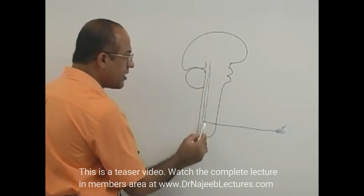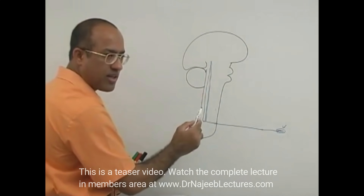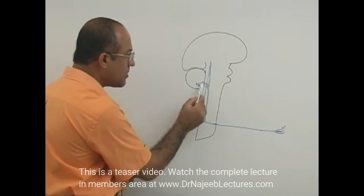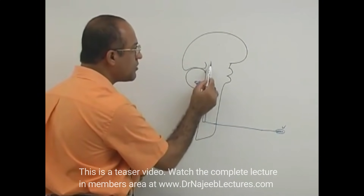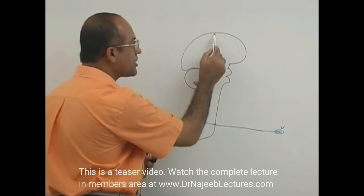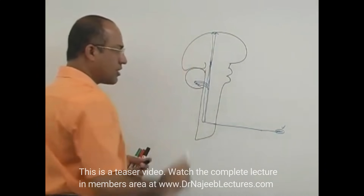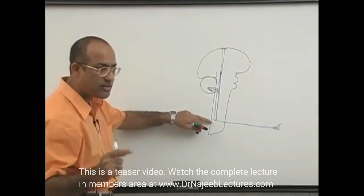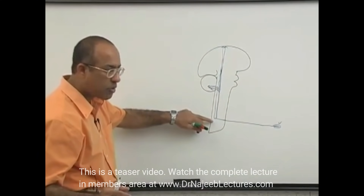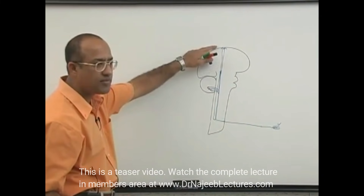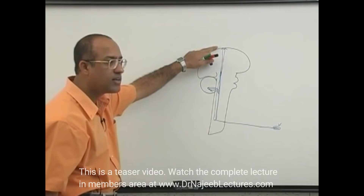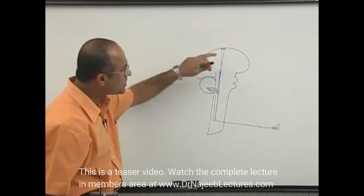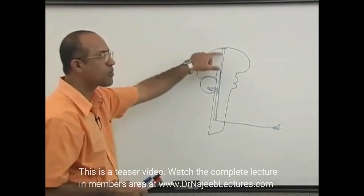Ascending tracks take information to the higher centers. Some tracks take information to the cerebellum; others take information through a chain of neurons eventually to the sensory cortex. All bundles of axons that carry sensory information from a lower level to an upper level of the central nervous system are called sensory tracks or ascending tracks.